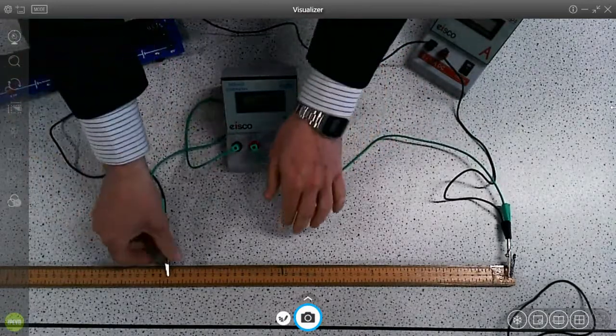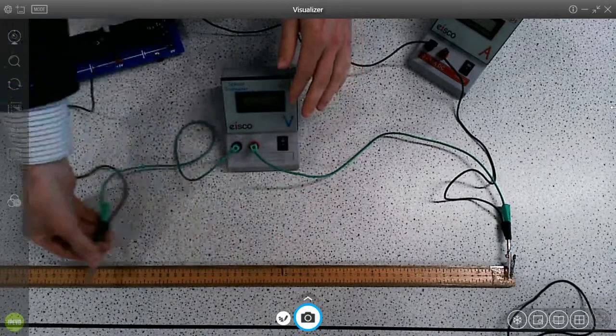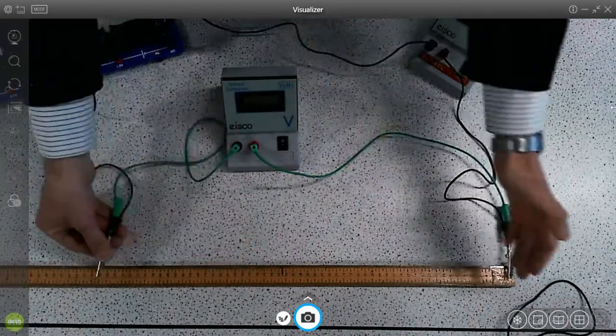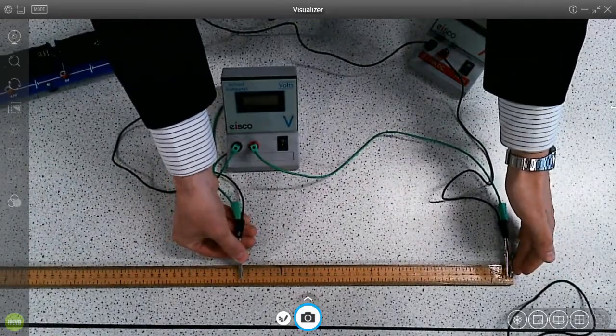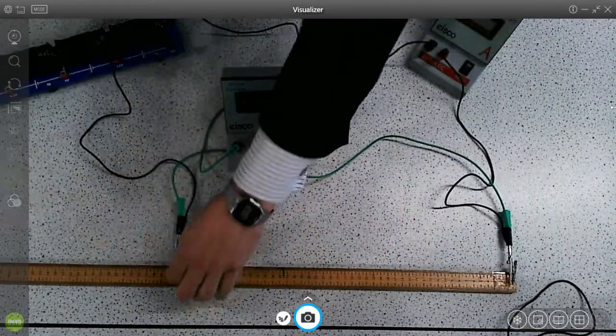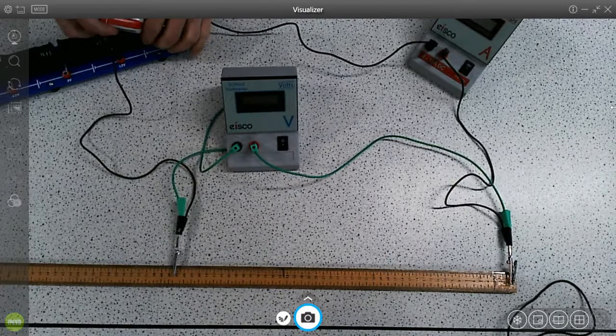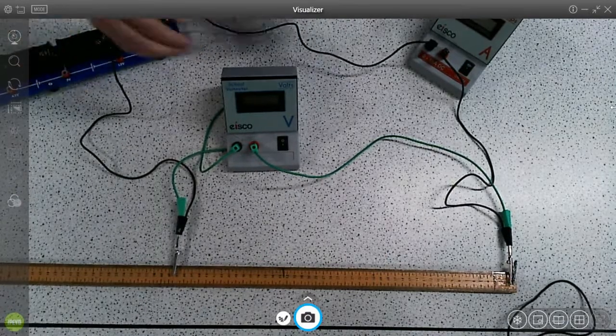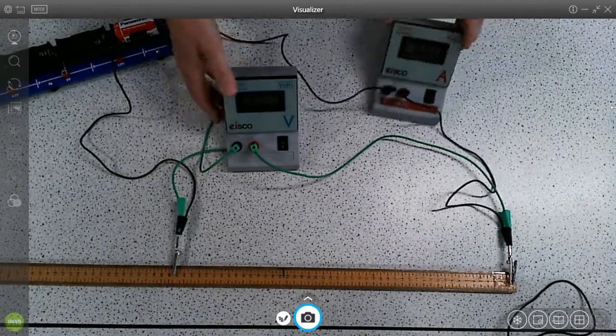So now this crocodile clip is the one that we're going to measure the length with, and the one that we're going to vary. So when we're doing the practical, always a good idea just to check it's going to work. So let's put in a single cell, and we'll turn on the ammeter and voltmeter.